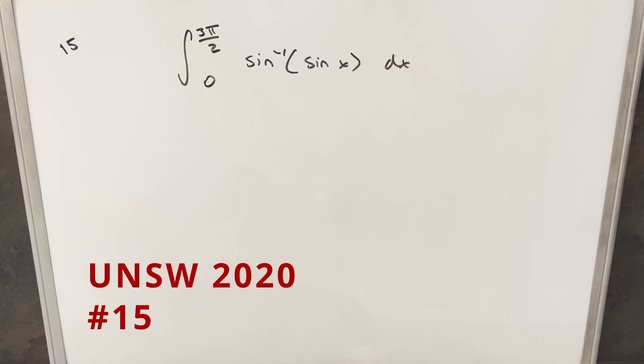Okay, we have here another interesting integral from the UNSW integration B 2020. This was problem 15. We have the integral from 0 to 3π/2 of arcsin(sin(x)) dx.